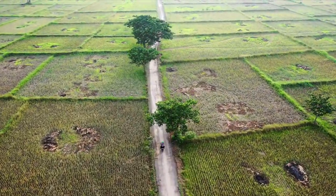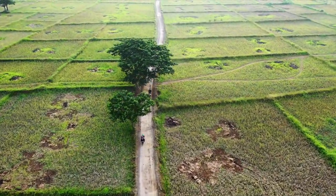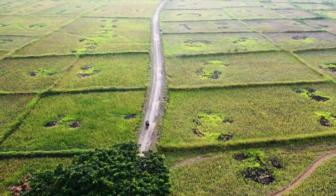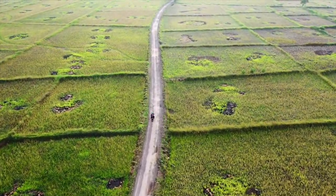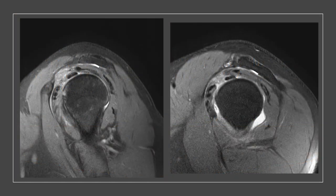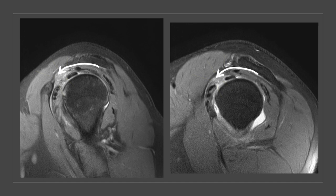Therefore, you cannot expect improvement if you choose a subacromial bursa injection for infraspinatus and subscapularis pathology. Does subacromial injection help in the treatment of adhesive capsulitis? The bursa contacts the coracohumeral ligament, which is the primary pathological site of adhesive capsulitis, so subacromial injection is logical to relieve pain, just as intra-articular injection does.